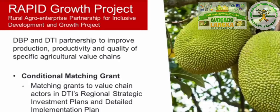Through the RAPID Growth Project, necessary development interventions will be provided to help improve production, productivity, and quality of specific agricultural value chains such as processed foods, fruits, and nuts. A key feature is the conditional matching grant, which provides grant fund support to qualified proponents to enhance their overall competitiveness and for the development of specific agricultural value chains, addressing market failures and institutional deficiencies in access to financing.